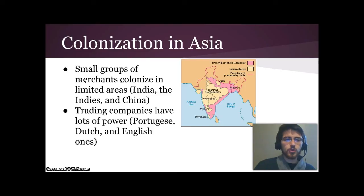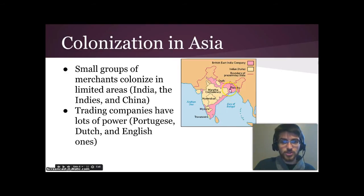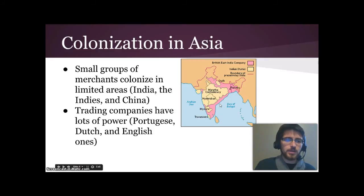In Asia, small groups of merchants colonized limited areas like in India, China, and the Indies. The British East India Company actually conquered a large pink area on the map — and they weren't a country, just a company. The lighter areas represent Indian states like the Maratha Confederacy, Hyderabad, and Mysore, where Indians ruled Indians. These trading companies ended up with an enormous amount of power, ruling sections of the world with millions of people — sometimes larger populations than their mother countries had.